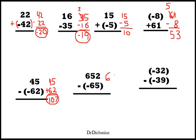So 652 plus 65 will give us 5 plus 2 is 7. 6 plus 5 is 11. 6 plus 1 is 7.